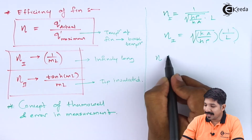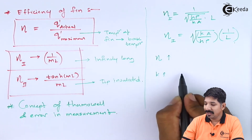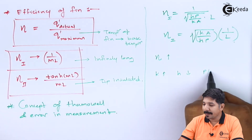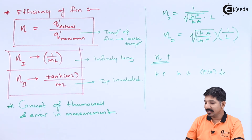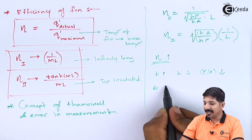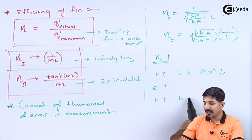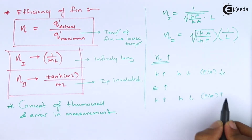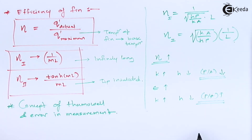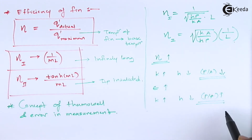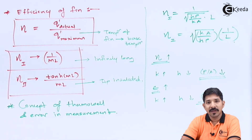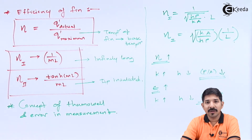Efficiency is high when thermal conductivity is high, H is low, and P/A ratio is low. This creates a dilemma: for effectiveness to be high, P/A should be high, but for efficiency to be high, P/A should be low. We need to optimize the fin design so that P/A is neither too high — causing low efficiency — nor too low — causing low effectiveness.